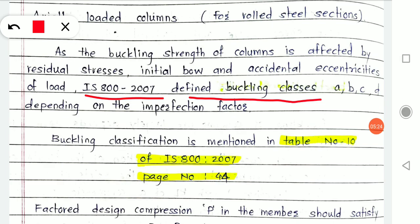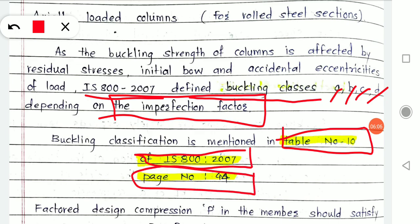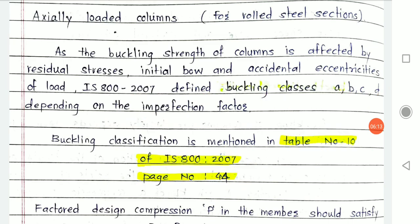You have a table for the buckling classes in your IS code and we will discuss it in depth afterward. Depending on the imperfection factor, sections are classified into four categories: A, B, C, and D. The table is Table 10 in IS 800:2000, on page 44. Open your IS code and go to that page — it will be required for further explanation.